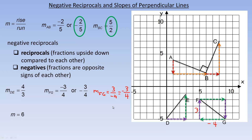Let's look at an example with a whole number. Take a slope of 6. Since 6 equals 6 over 1, the rise is 6 and the run is 1. To find the perpendicular slope, flip the fraction and change the sign: 6 on top becomes 6 on the bottom, 1 on the bottom becomes 1 on top, and since 6 is positive, the result is negative 1 sixth. So the perpendicular line goes right 6 and down 1, giving a slope of negative 1 sixth, and the two line segments do look perpendicular.